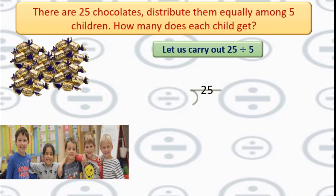I will write 25, and 5 outside the division symbol. We need to use the 5 times table until we get 25 or less than 25. 5 ones are 5, 5 twos are 10, 5 threes are 15, 5 fours are 20, 5 fives are 25. We got 5 fives are 25.